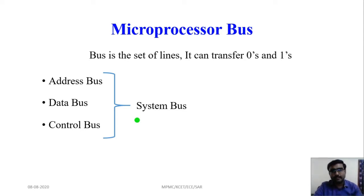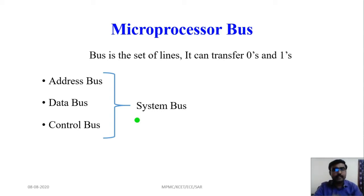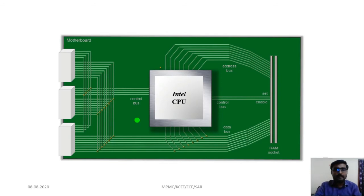The address bus, data bus, and control bus together are also called the system bus. To summarize: the address bus carries the address, the data bus carries the information, and the control bus controls the functions of the CPU. This is the microprocessor bus.